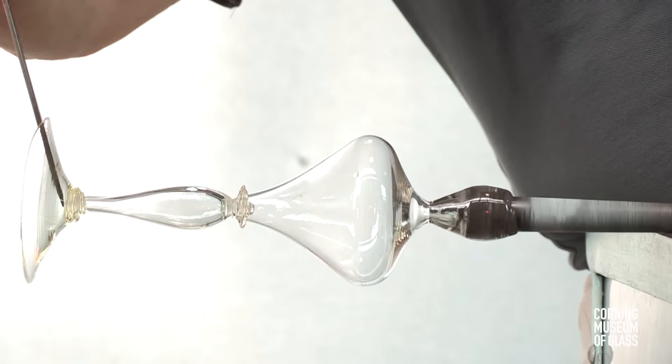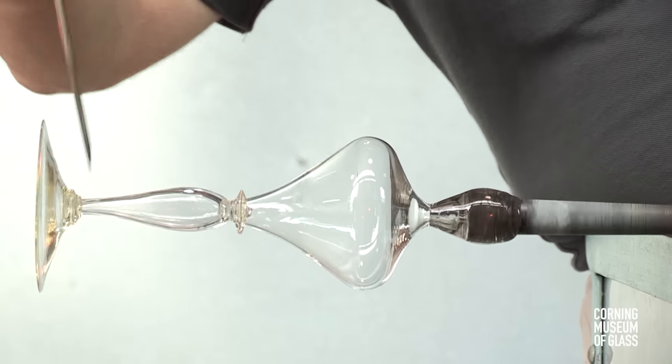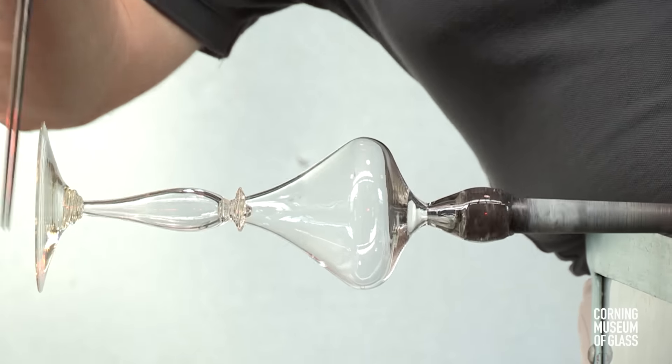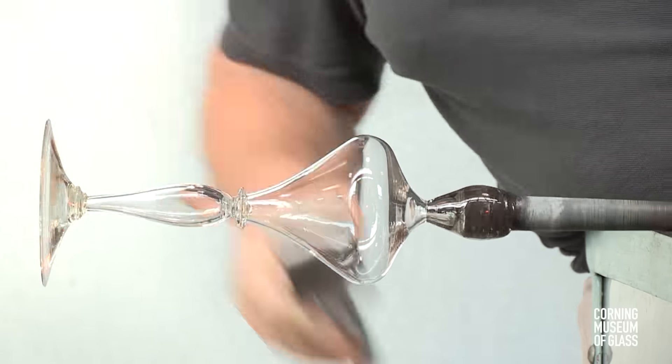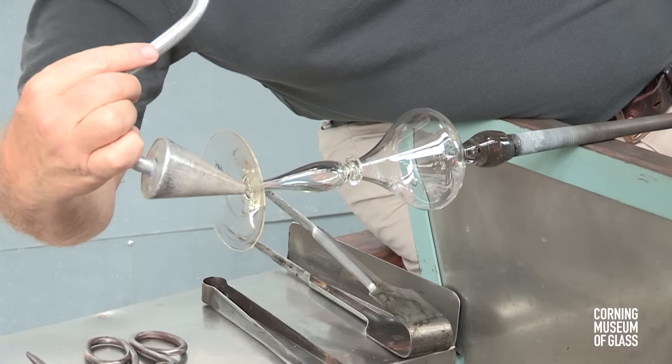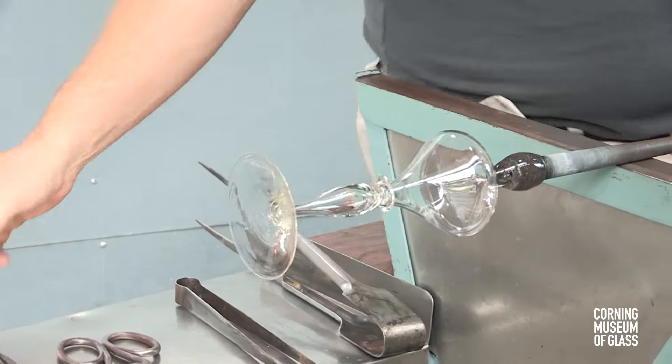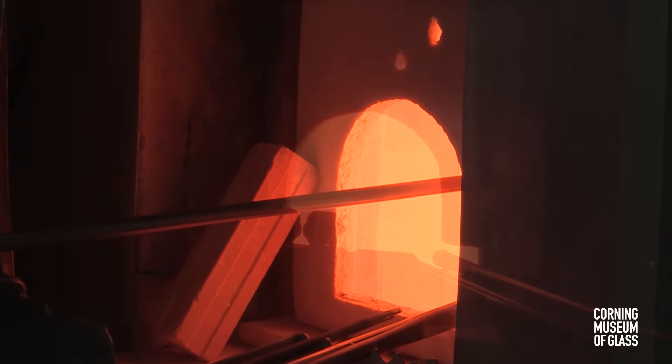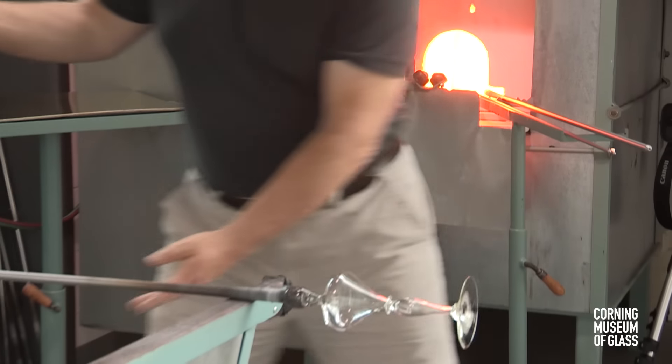Because the glass is so thin, it must be reheated frequently. The foot is given its final shape. The site where the punty will be attached is cooled somewhat. The entire object flashed in the furnace, and the punty attached.